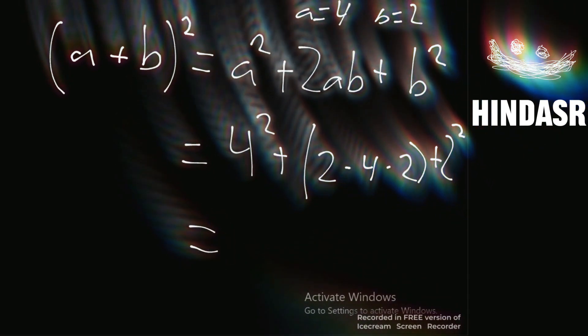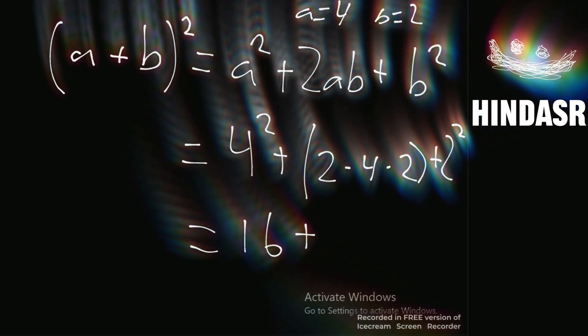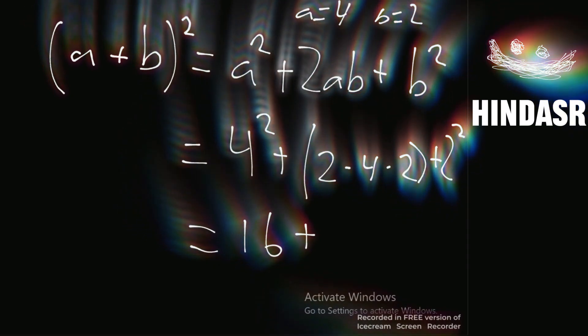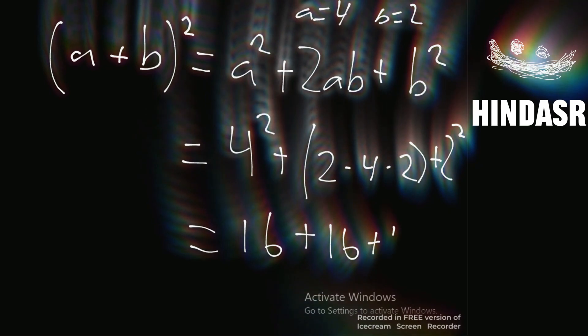And now 4 squared is 16, 2 times 4 is 8, times 2 is 16, and then 2 to the power of 2 is 4.